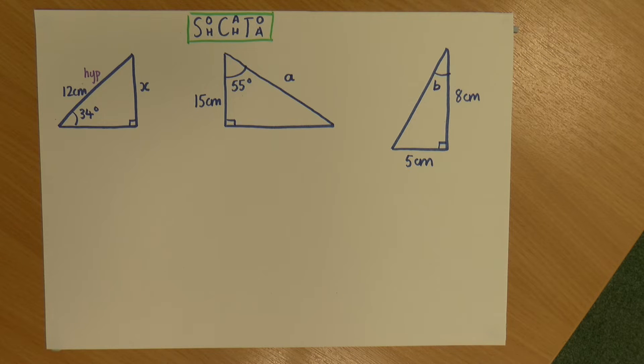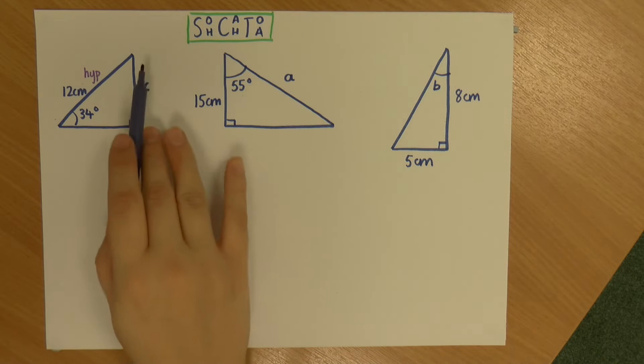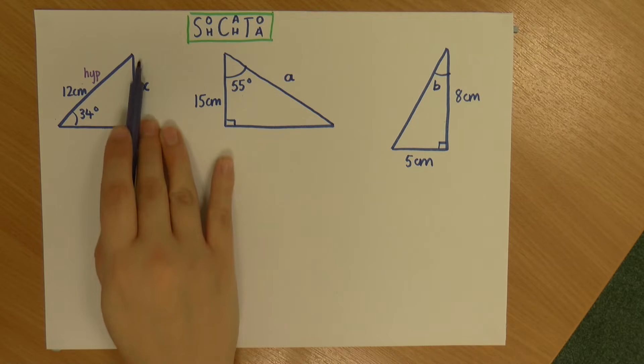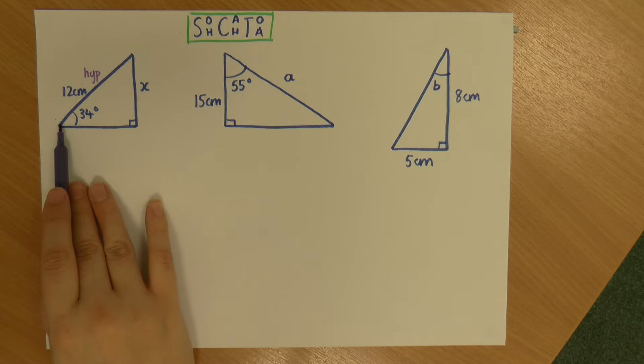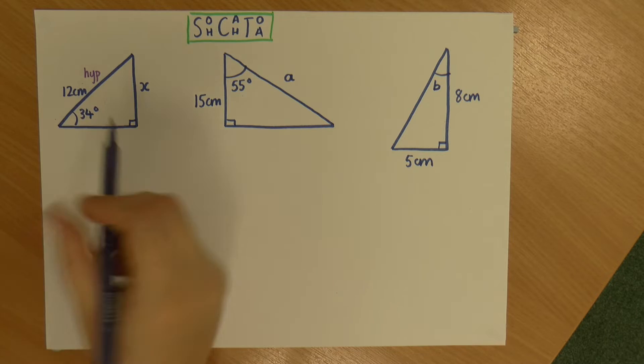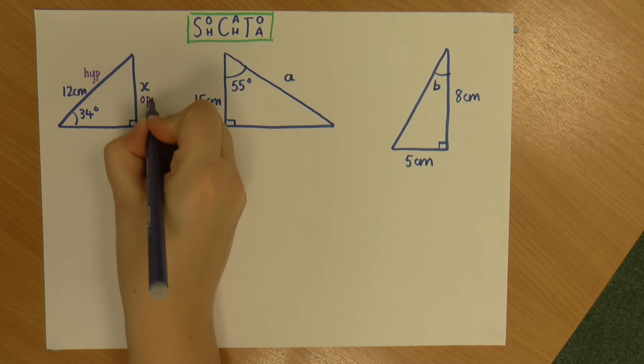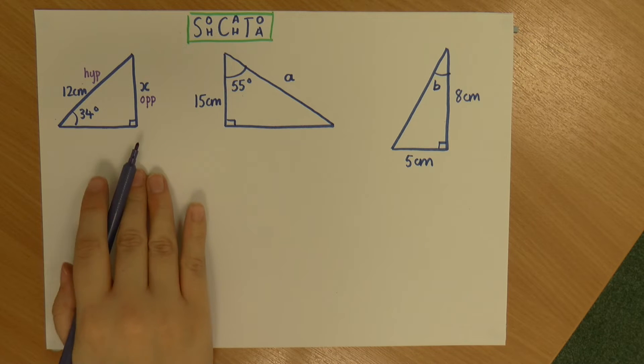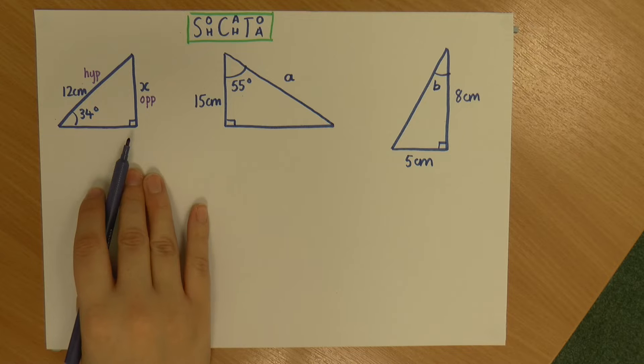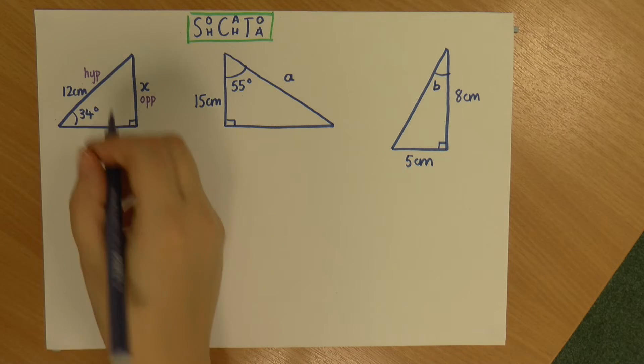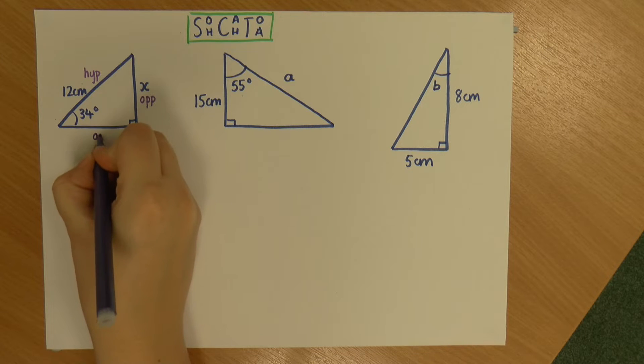I now need to identify what my other two sides are. So on the right, I've got my side X, that is opposite the angle, so that is my opposite side. And if you're not comfortable with doing this, please do see my previous video on identifying the hypotenuse opposite and adjacent. And that means that this side is the adjacent.